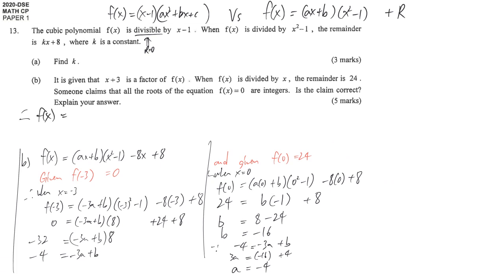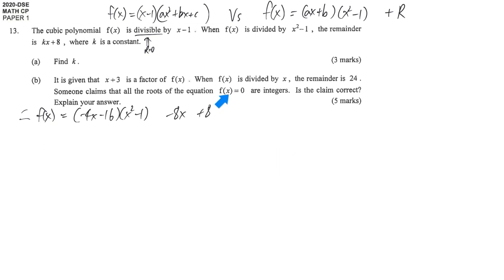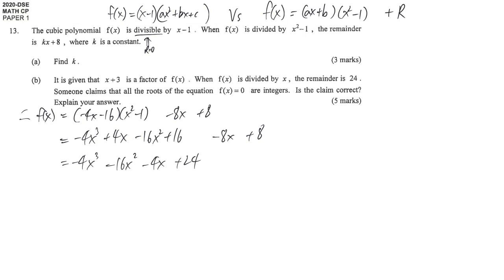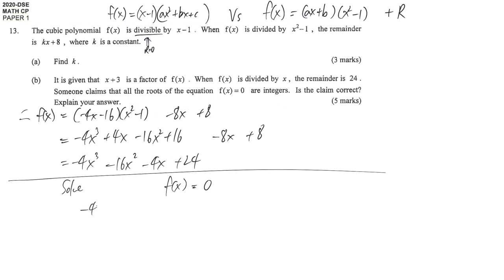We now have the full picture: f(x) equals (negative 4x plus negative 16)(x squared minus 1) minus 8x plus 8. Expanding: negative 4x cubed plus 4x minus 16x squared plus 16, minus 8x plus 8. Grouping similar terms gives f(x) equals negative 4x³ minus 16x² minus 4x plus 24. To solve f(x) equals 0: negative 4x³ minus 16x² minus 4x plus 24 equals 0.